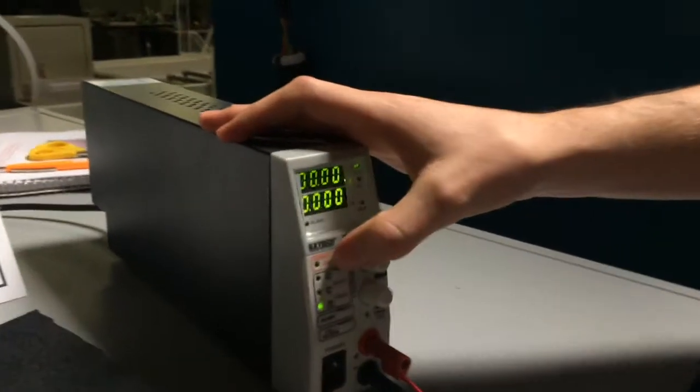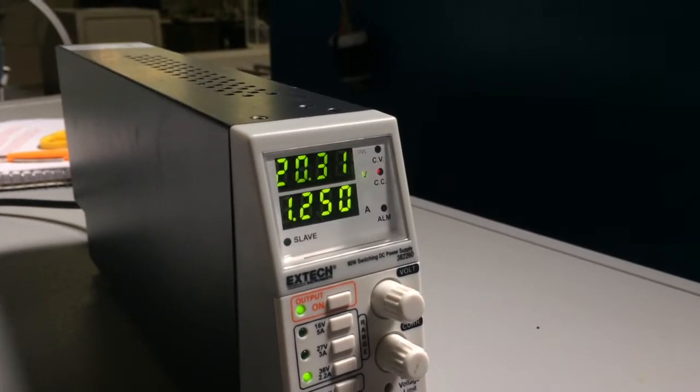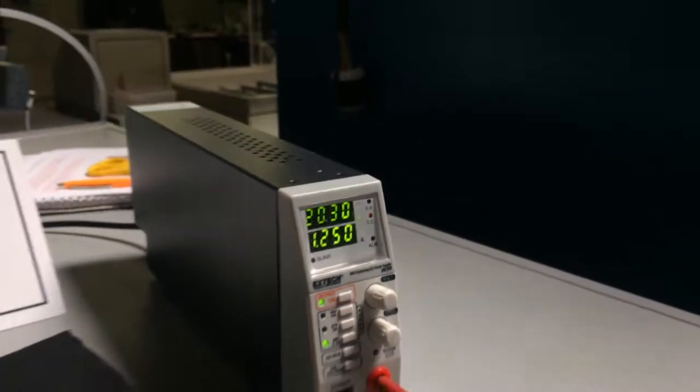We will now turn on the output of our power supply to begin supplying a constant 25 watts to our LED panel. As you can see, the LED panel is now on and running.